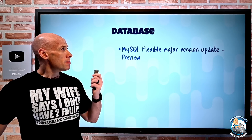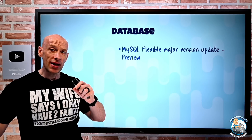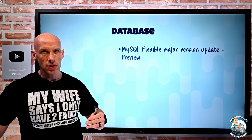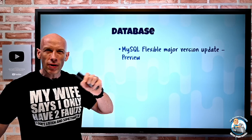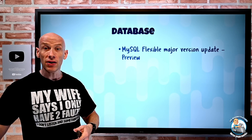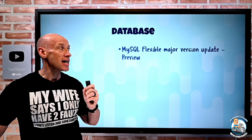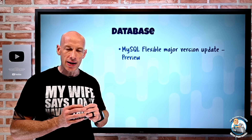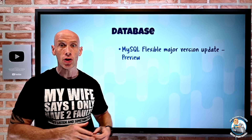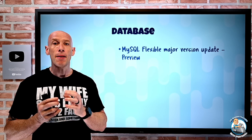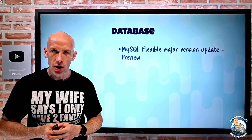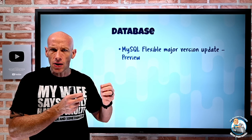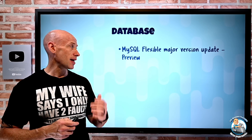On the database side, MySQL Flexible — the VM-based version of MySQL with burstable VMs, stop/start, automatic HA, and more configuration options — now has major version update in preview. In the past, moving between major versions required spinning up a new version and migrating data. Now, in preview, there's an in-place major version update. Today it's 5.7 to 8, and it's a click of a button. There is some downtime depending on the size of the database.